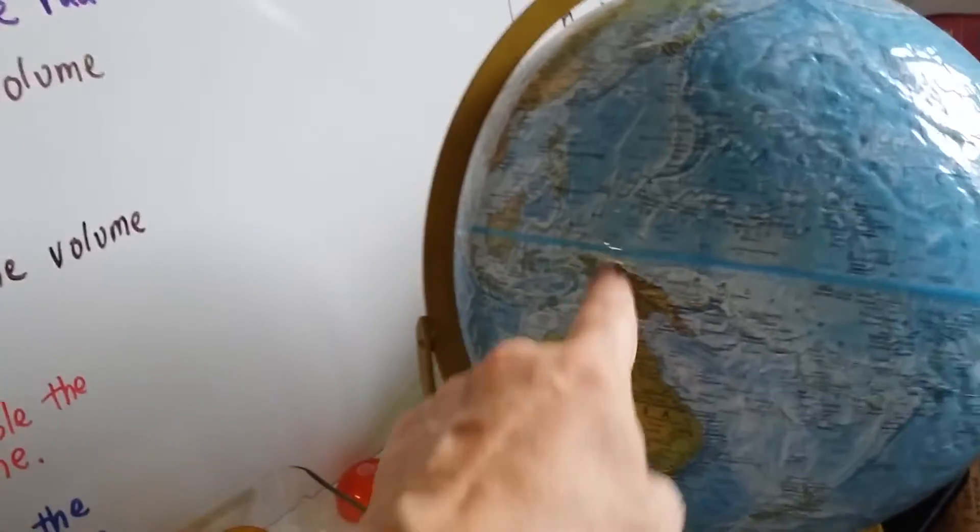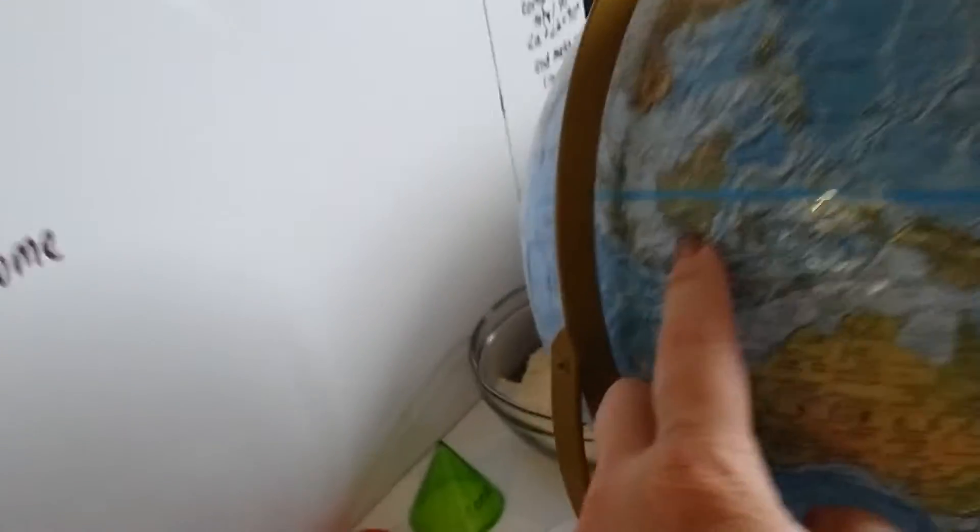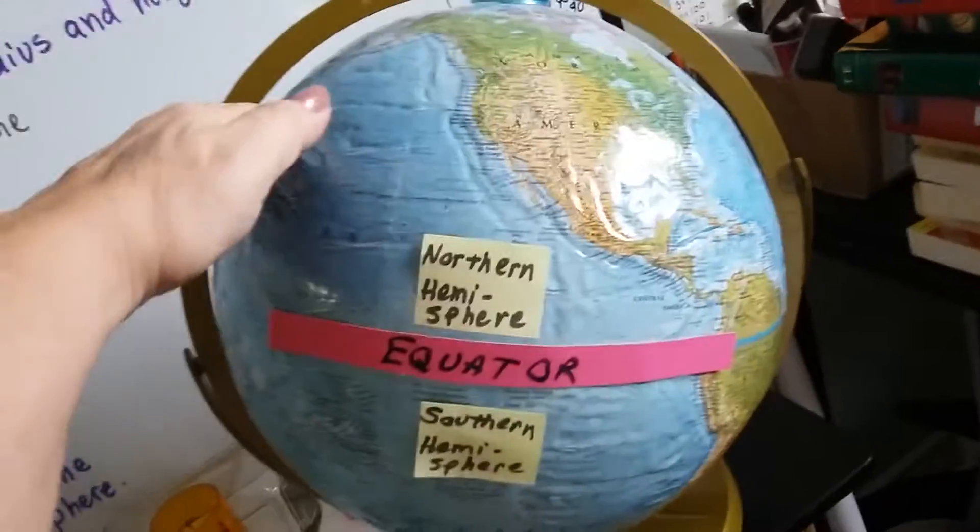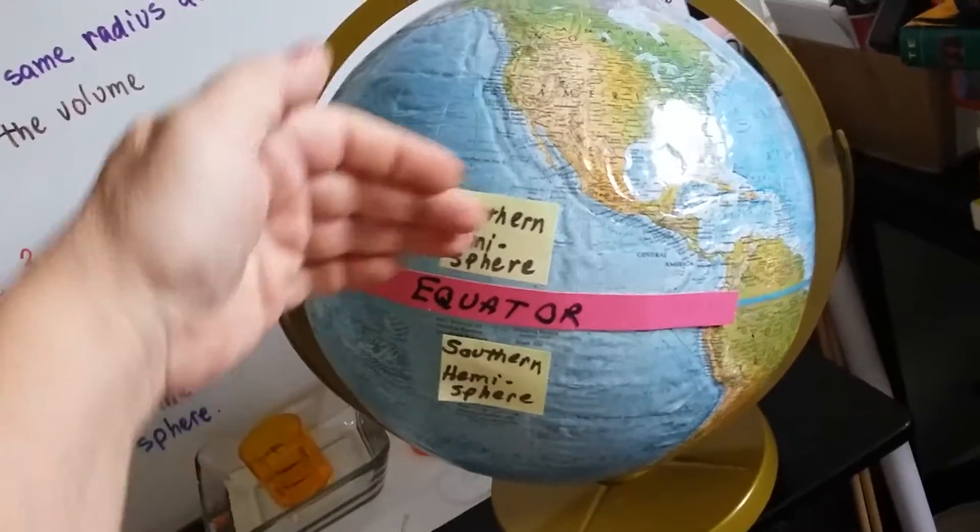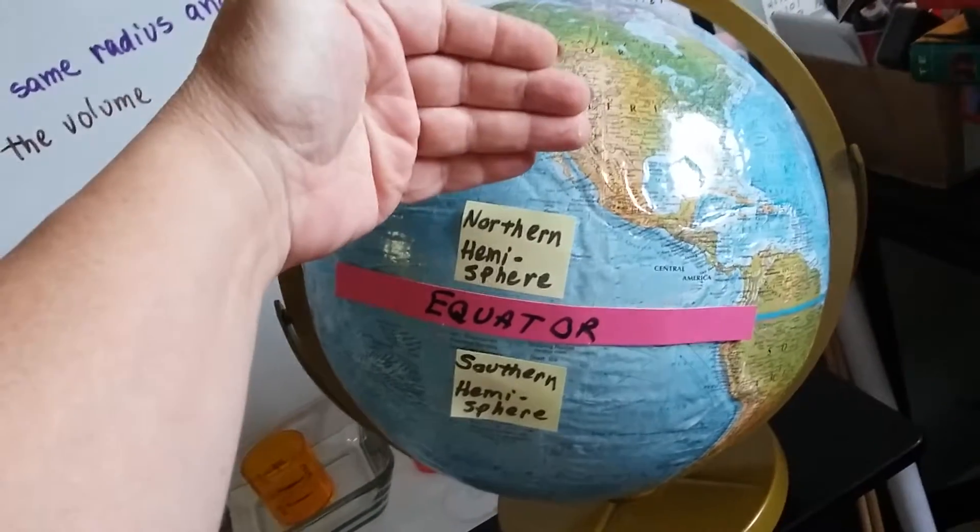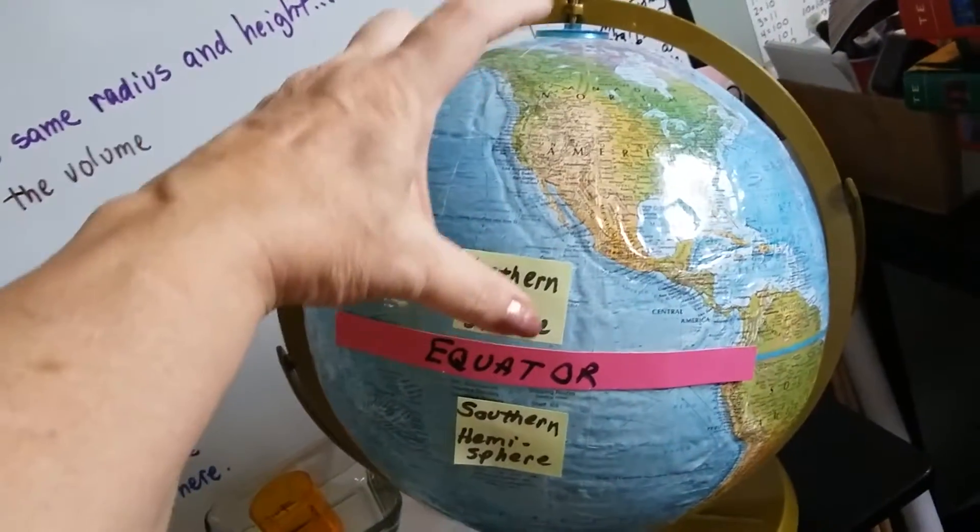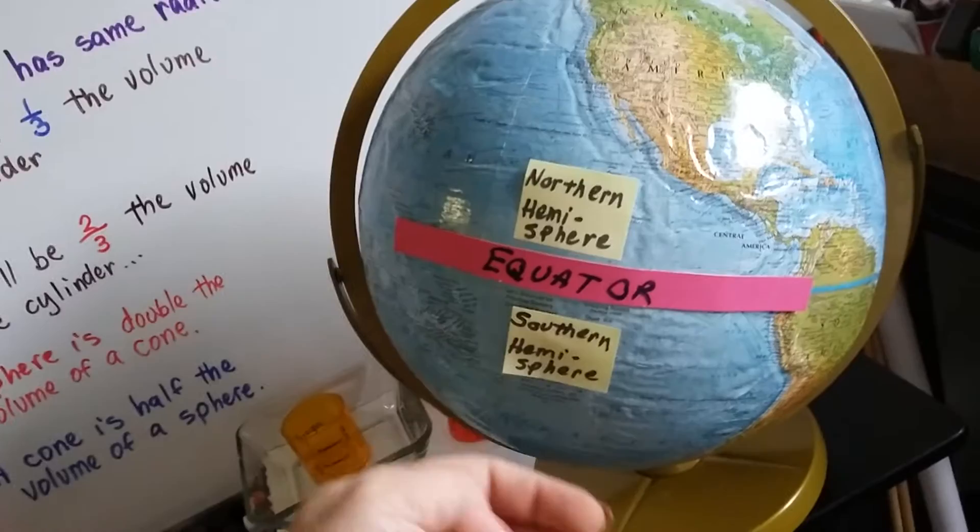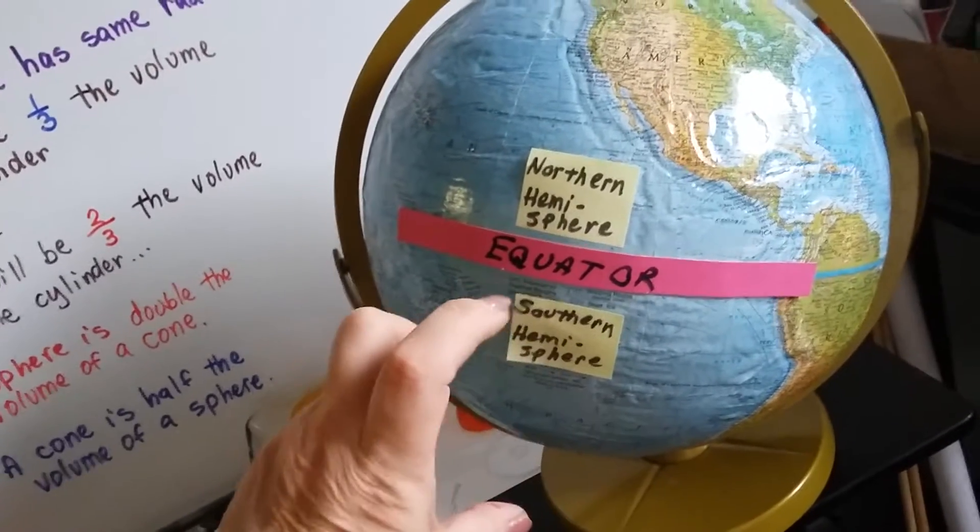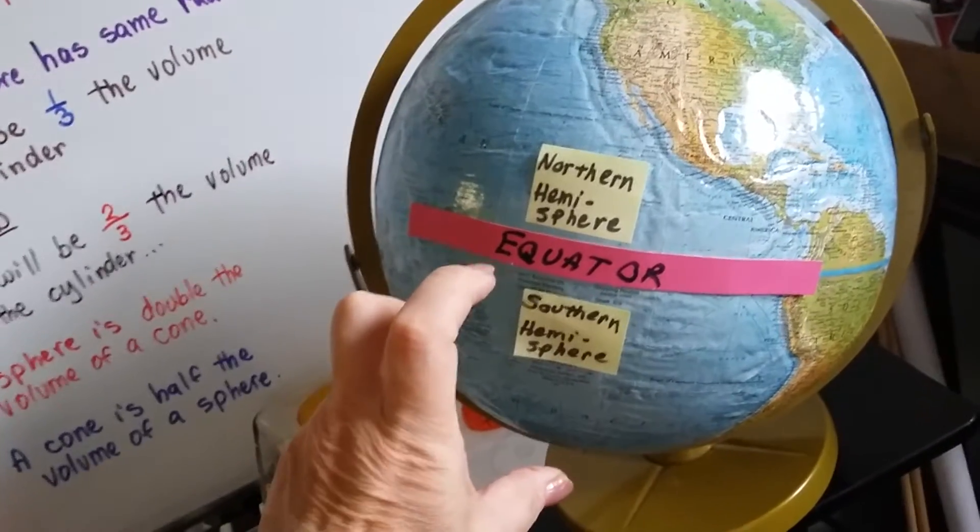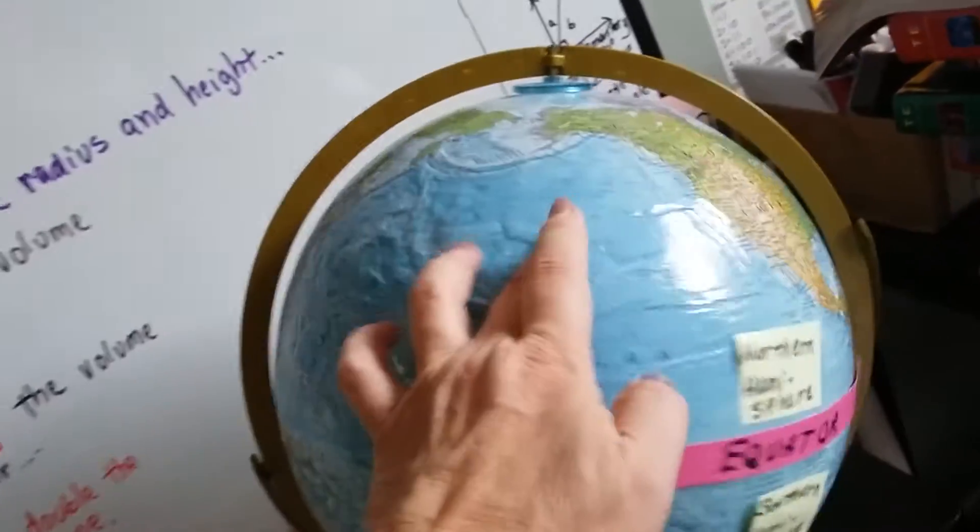If we look over here, we can see it goes above Australia, and it continues all the way around the whole globe. So I put this pink paper here so we could see the equator. Above the equator is the northern hemisphere, half of the sphere. And below it is the southern hemisphere, the southern half of our sphere. It's just a big ball.